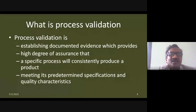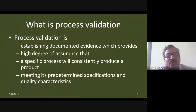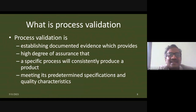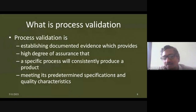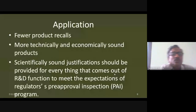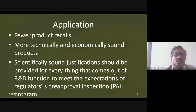Process validation is establishing documentary evidence which provides a high degree of assurance that a specific process will consistently produce a product meeting predetermined specifications and quality characteristics. This standard definition breaks into four parts: creating predetermined specifications, checking against them, creating documentary evidence, and proving the equipment and process consistently delivers the required quality. Performing qualification reduces product recalls and prevents product failures.